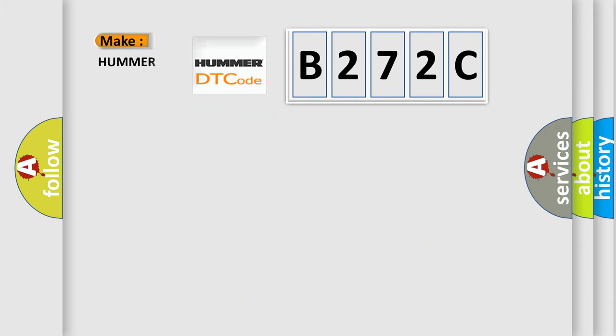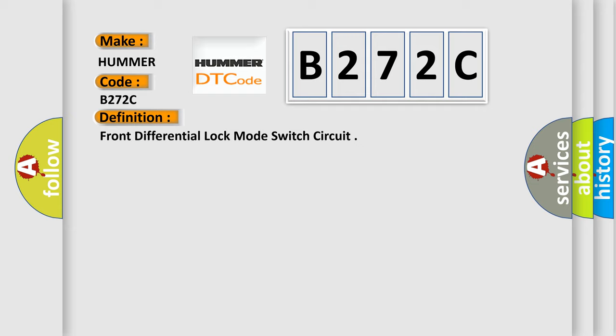So, what does the diagnostic trouble code B272C interpret specifically for car manufacturers? The basic definition is: Front differential lock mode switch circuit.